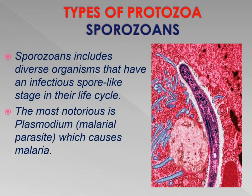The last type of protozoan is the sporozoans. Sporozoans include diverse organisms that have an infectious spore-like stage in their life cycle. The most notorious among sporozoans is Plasmodium, which causes malaria in human beings.